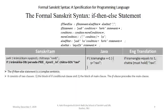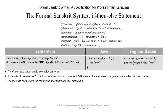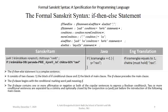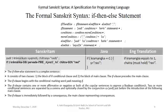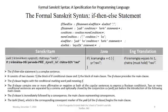If-then-else statement is a complex sentence. It consists of two clauses: the block of the if-conditional clause and the block of the main clause. The if clause precedes the main clause and begins with the conditional marker 'yadi,' meaning 'if.' The if clause contains one or more affirmative, negative, or both copular sentences to express a Boolean condition. Two or more conditional sentences are separated by a comma and officially closed by the conjunction 'cha,' just before the introduction of the following main clause. The if clause is immediately followed by the main clause representing consequences, which begins with 'tarhi,' the corresponding consequent marker of 'yadi.'